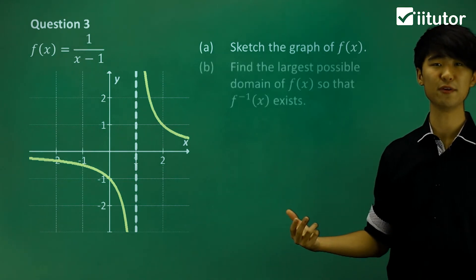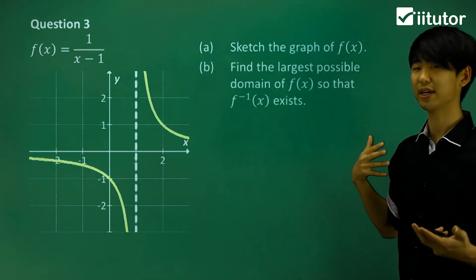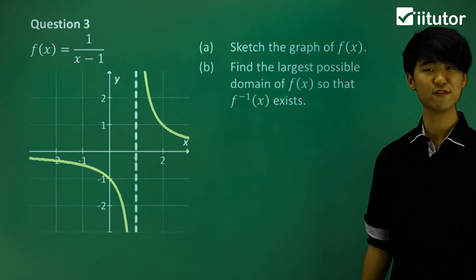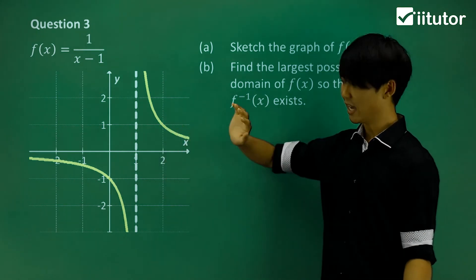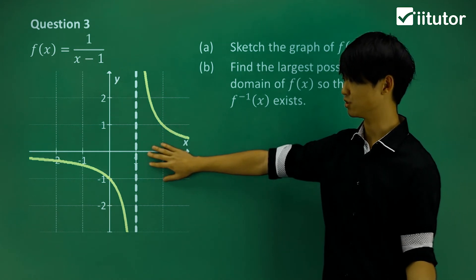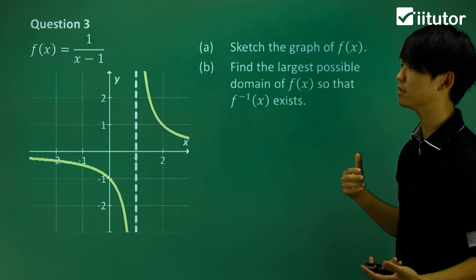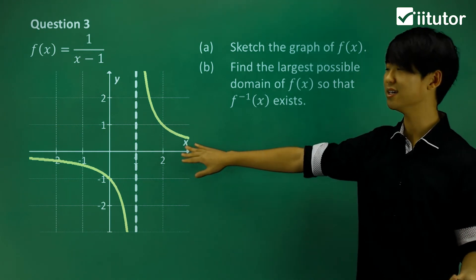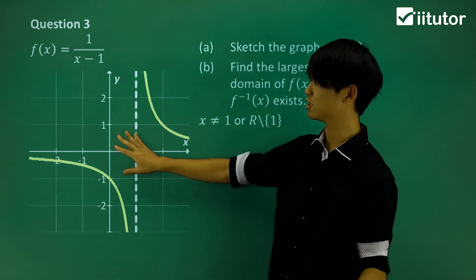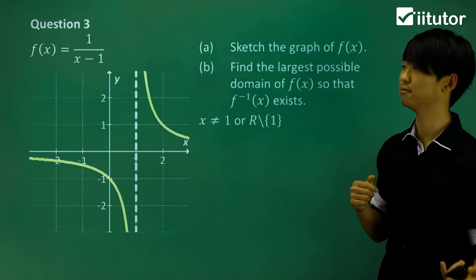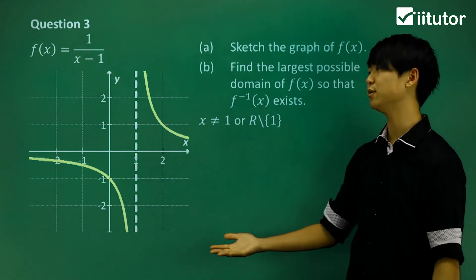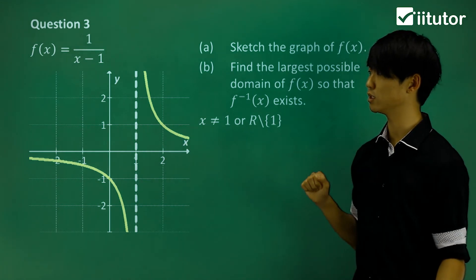In part B, we again find the largest possible domain for the inverse to exist. For an inverse to exist, the original function must be 1-to-1. If you look at this hyperbola, it's already 1-to-1, so it already has an inverse. The largest domain is simply the original domain: x ≠ 1, because we can't have a zero denominator. No further restriction is needed.